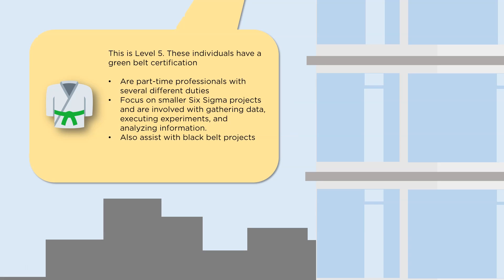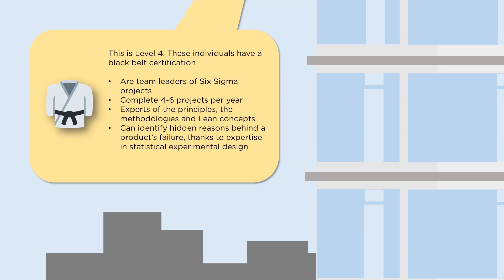Level 4 are individuals with a black belt certification — usually team leaders of a Six Sigma project. They complete four to six projects a year and are experts in the principles, methodologies, and lean concepts. Thanks to their understanding of statistical experimental design, they can also understand the hidden reasons behind why a particular product failed.